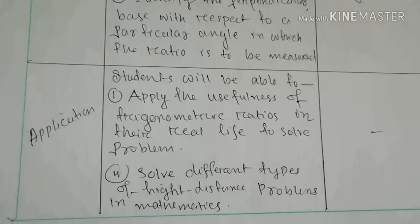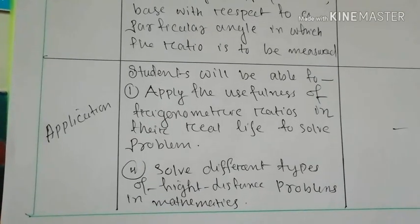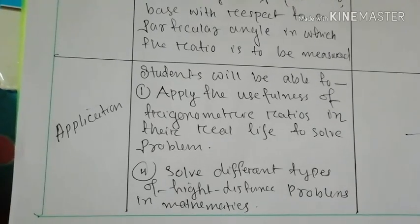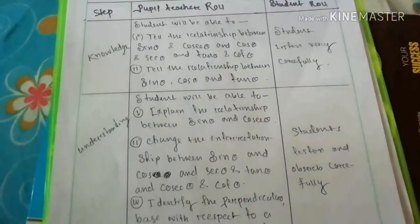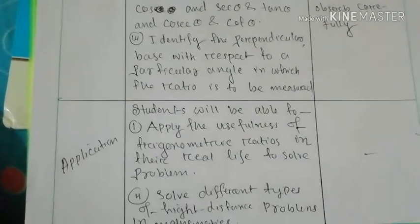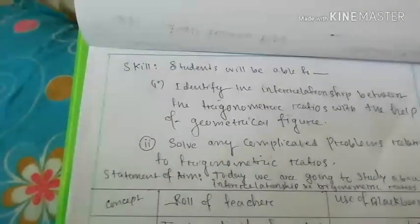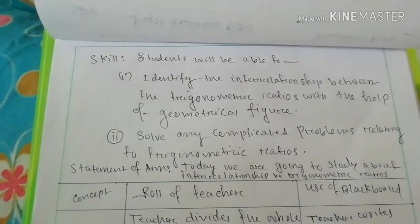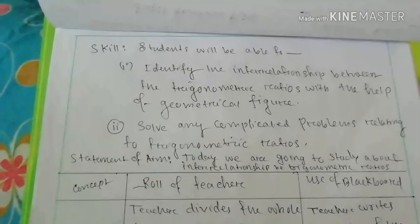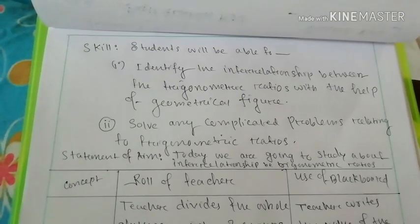The third step is application. The student will be able to apply the usefulness of trigonometric ratios in their real life to solve problems. Number two, solve different types of height and distance problems in mathematics. The next step is skill: solve any complicated problem relating to trigonometric ratios.